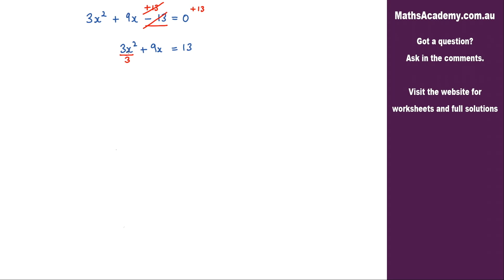And if I divide this term by 3 I must divide every term by 3, again to keep the equation balanced. These 3s will cancel. So that will leave me with x squared. The 9 divided by 3 — that'll be 3. So I've got 3x, and that is equal to 13 over 3.